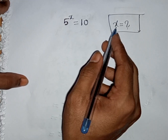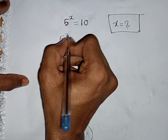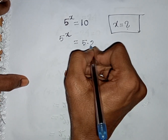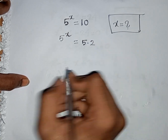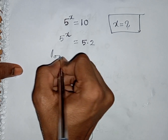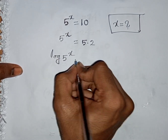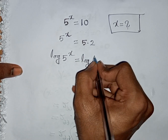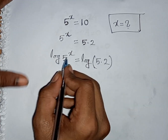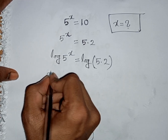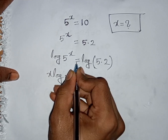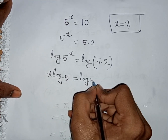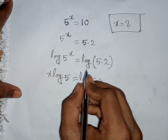How to solve: 5 power x equals 10, find the value of x. We have 5 power x equals 10, and 10 can be written as 5 times 2. Now we apply log on both sides, so log of 5 power x equals log of 5 times 2. This power x moves to the front: x log 5 equals log(5 times 2), that means log 5 plus log 2.